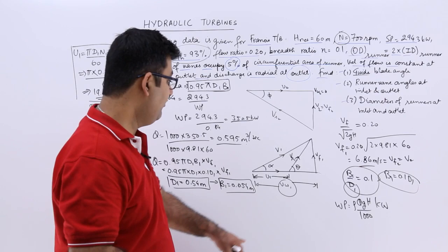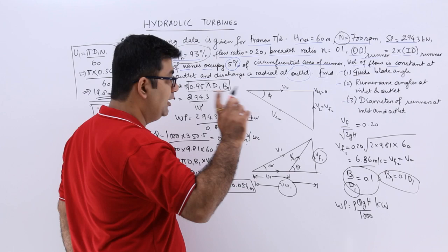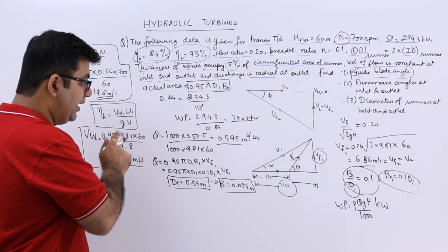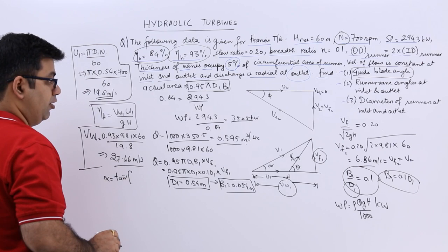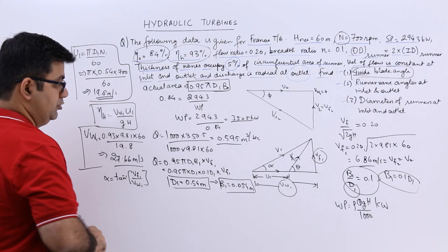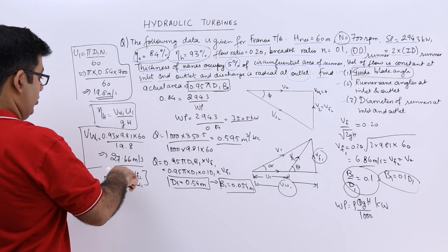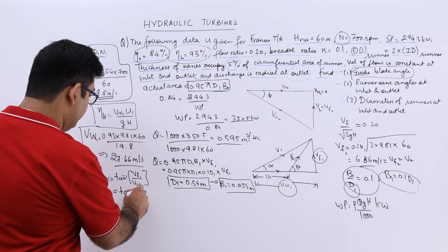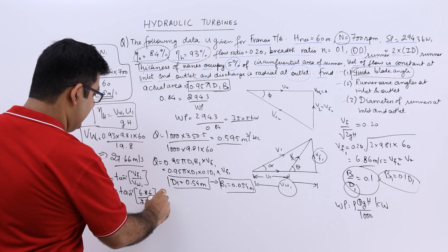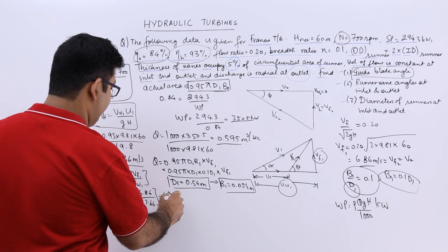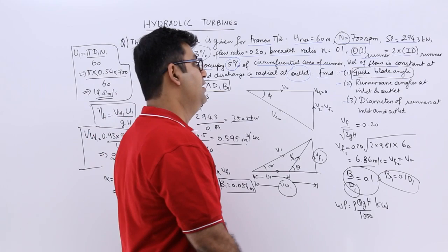Now we have VF1 = 6.86 and VW1 = 27.66. The guide blade angle alpha = tan⁻¹(VF1 / VW1) = tan⁻¹(6.86 / 27.66) = 13 degrees 56 minutes.